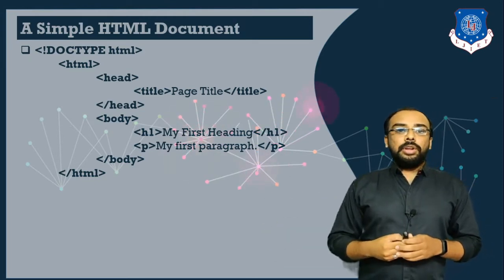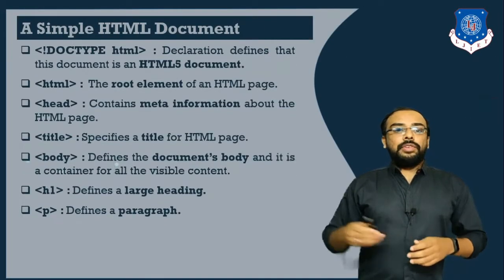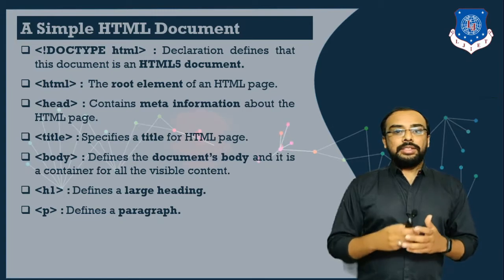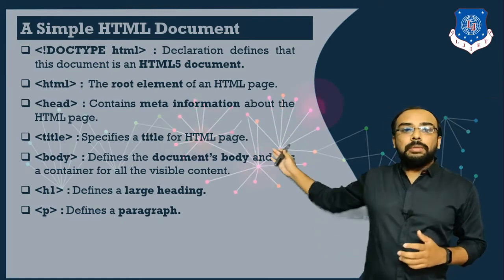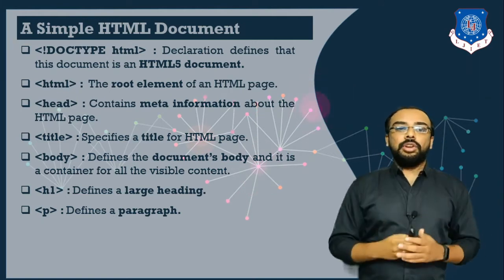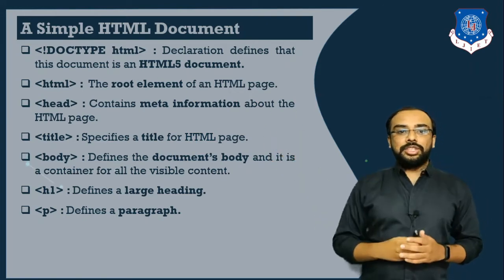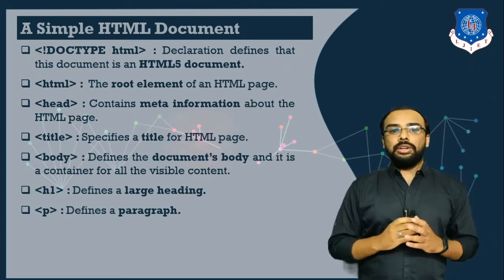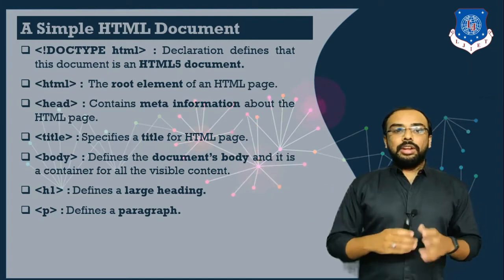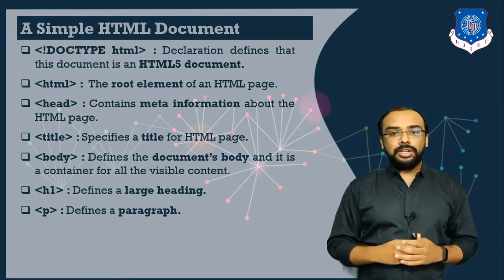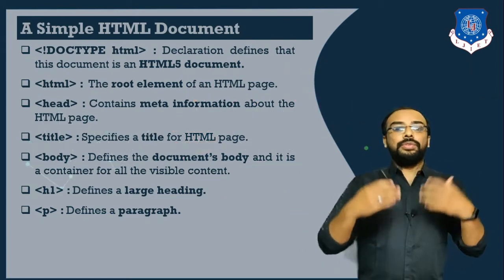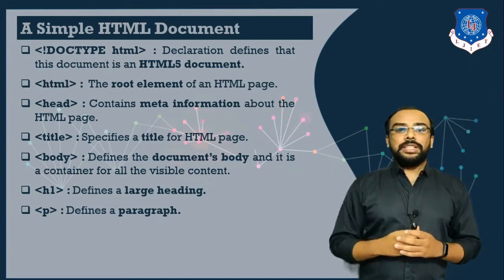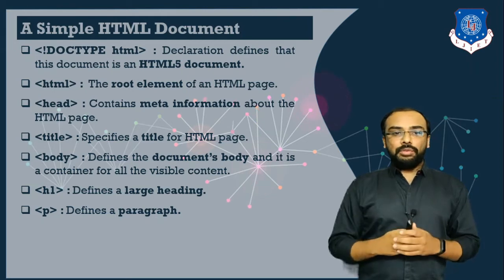The first tag — doctype HTML — indicates that this particular document is an HTML5 document. HTML5 is the latest version of HTML. The HTML tag is the root tag and is a mandatory tag. The head tag contains meta information — data about data information of your particular HTML page. The title tag is used whenever you want to specify a title for your HTML page.